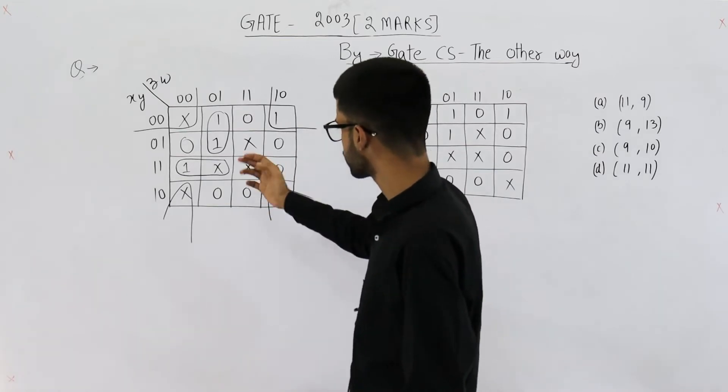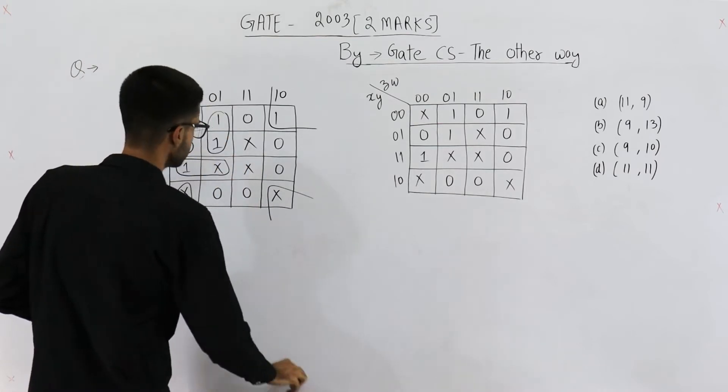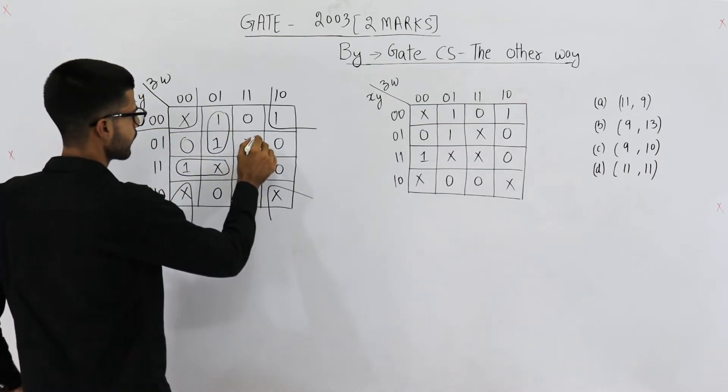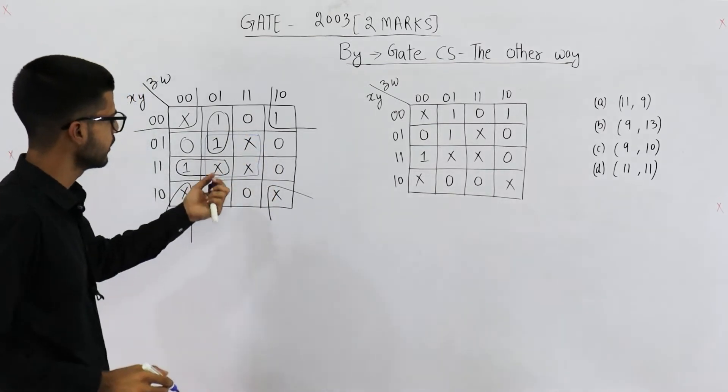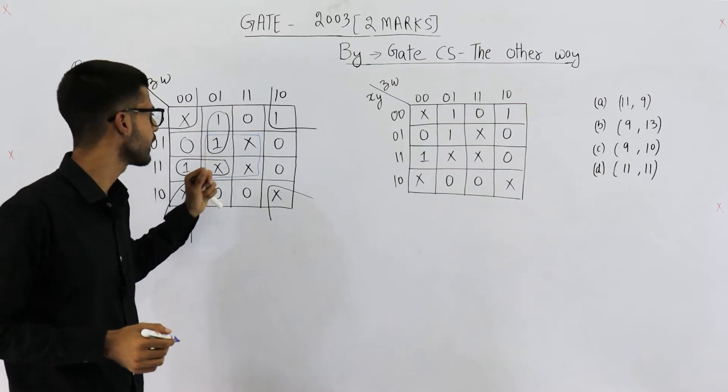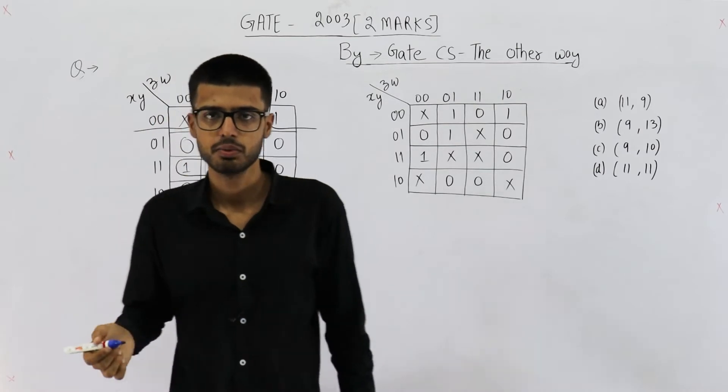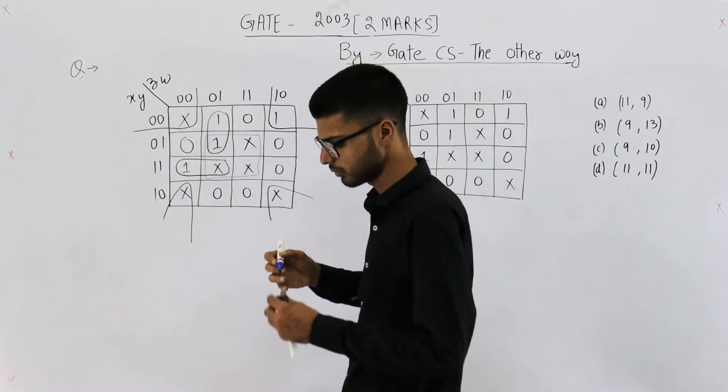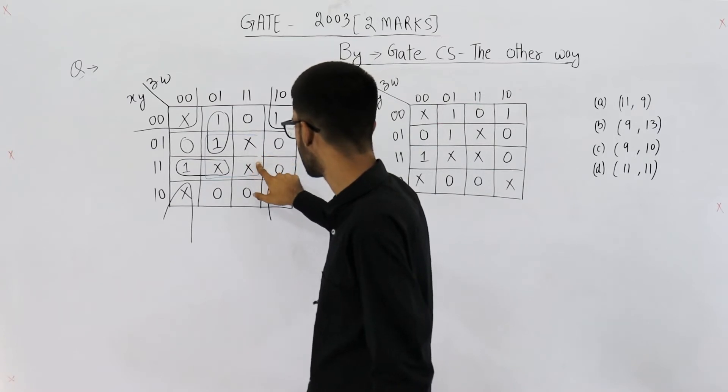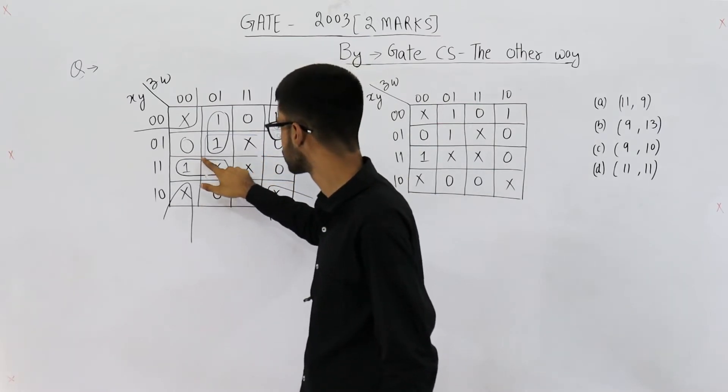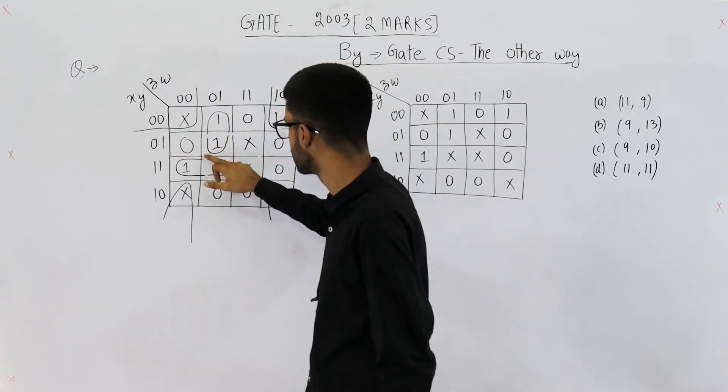And moreover, it's clear from here that even if you form such a group, even if you form such a group like this, it is not essential. Because you cannot find even a single one, which is not grouped by some other prime implicant. So you have it or you don't have it. It's one and the same thing. Because all the ones are already grouped. So it's better not to include this group.